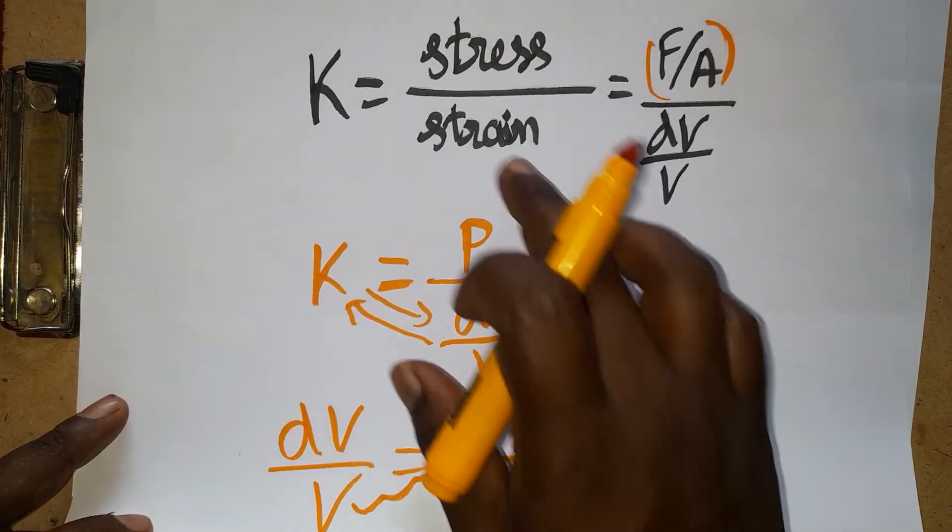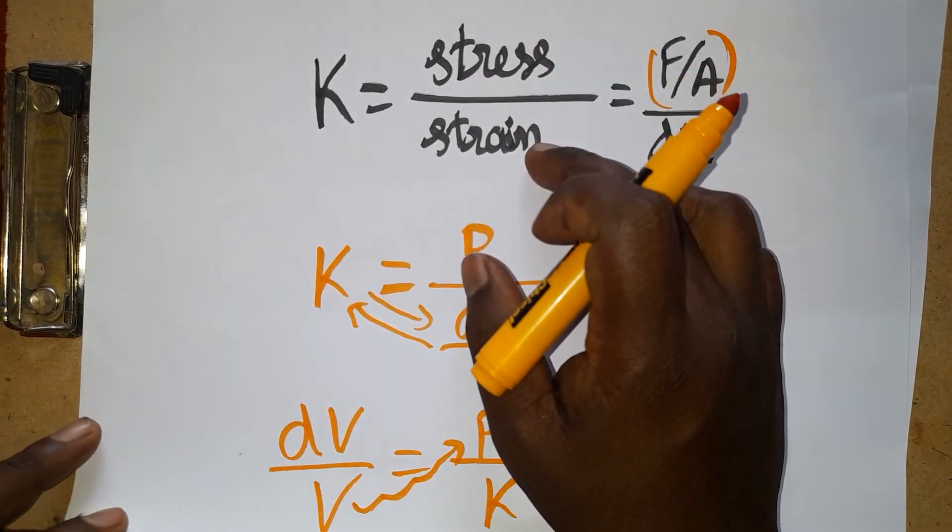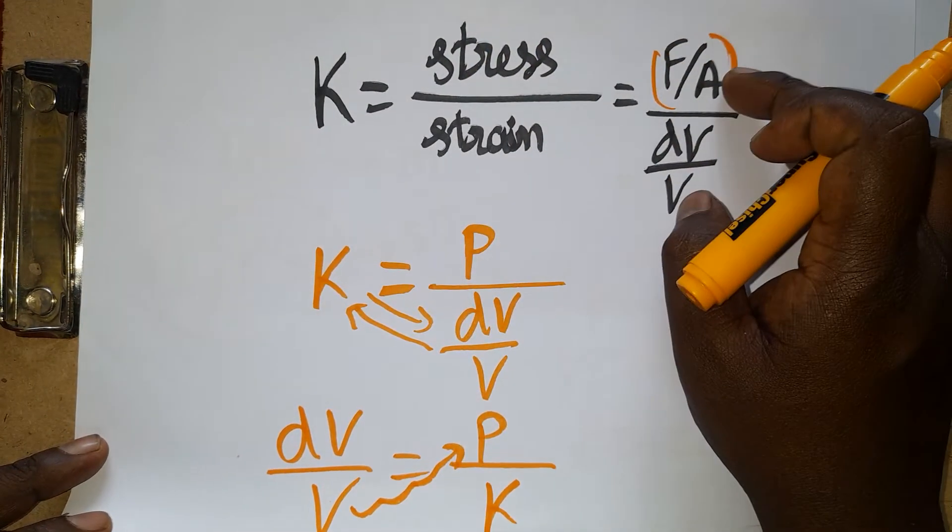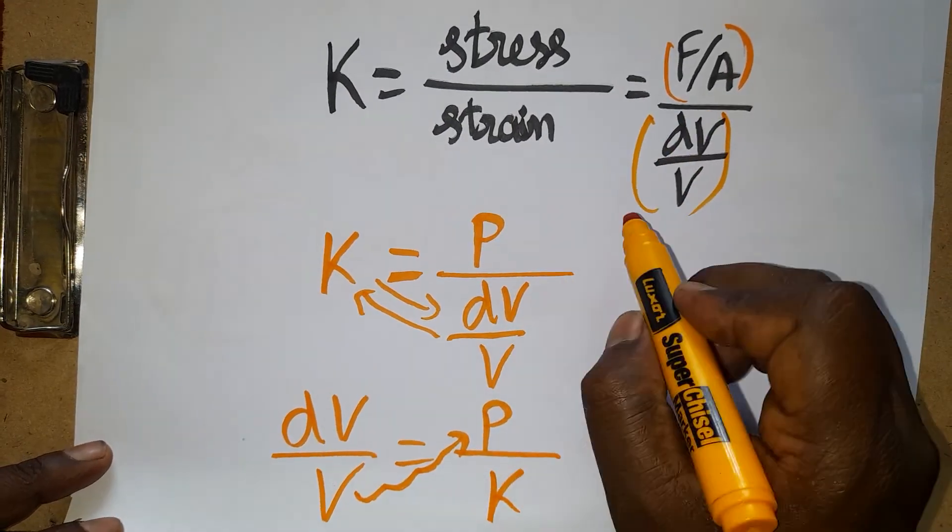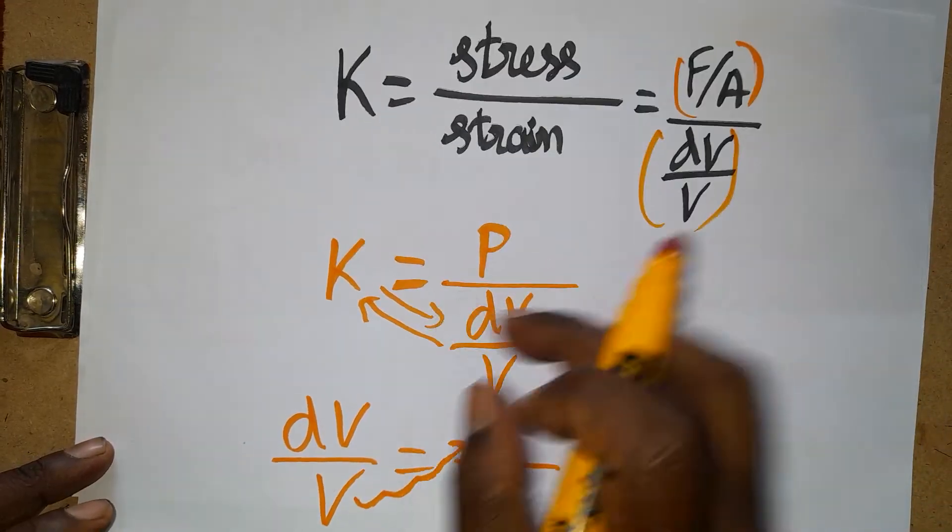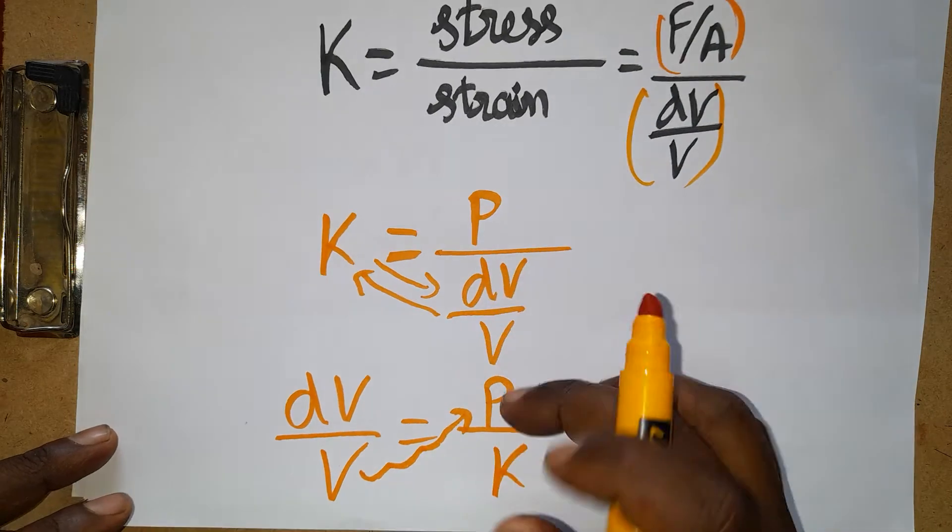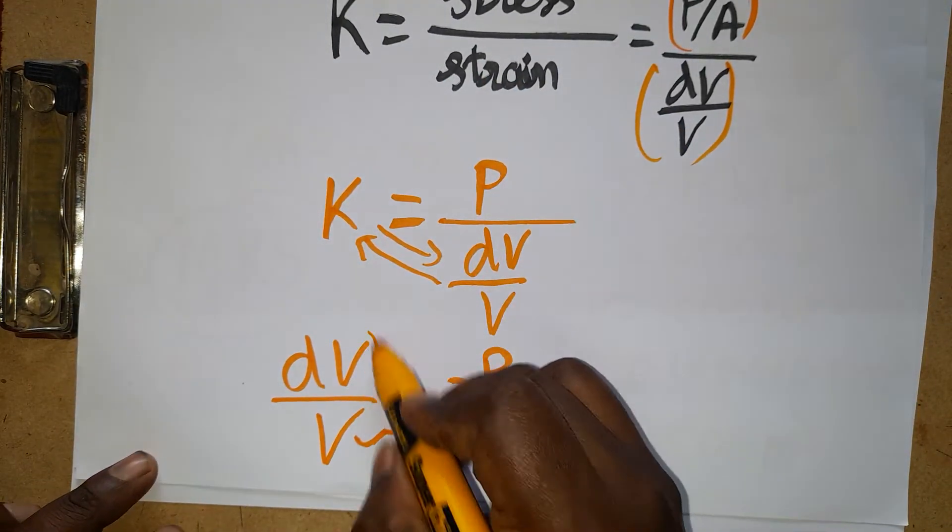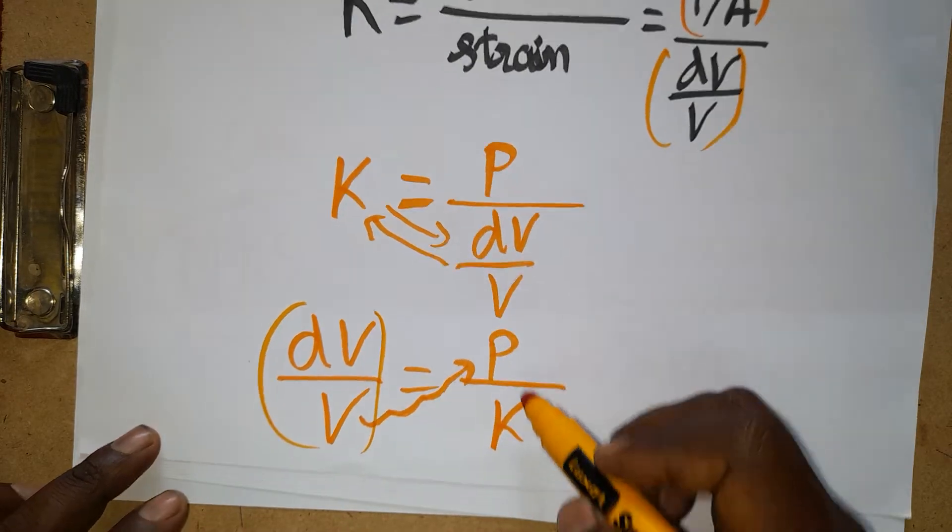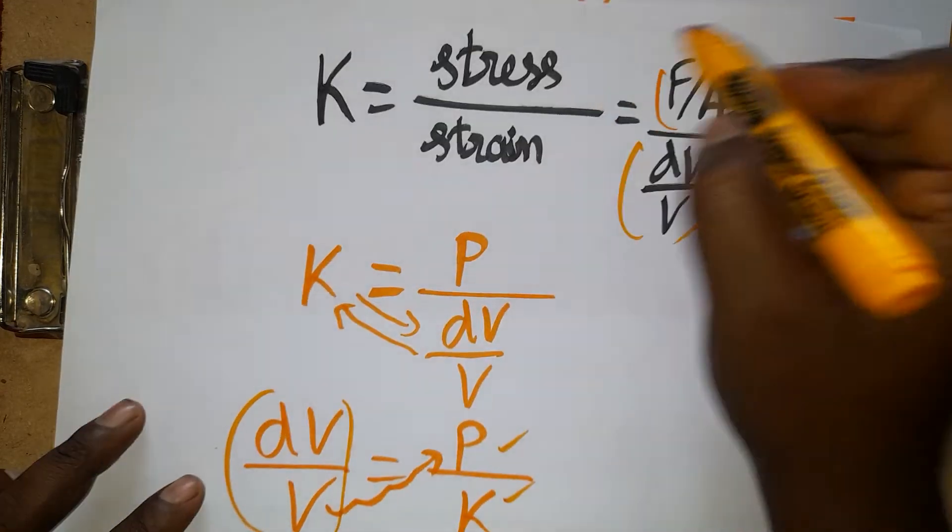Bulk modulus is equal to stress by strain. Stress is force per unit area, and changing volume by original volume is called strain. To find changing volume, just modify this. You can bring this side, the denominator, like cross multiplication.